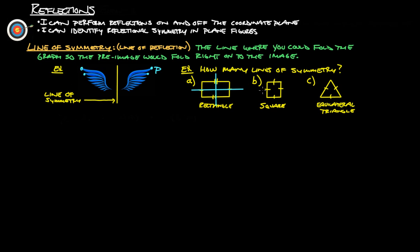With a square, we have the same lines — you could fold it in half this way, fold it in half that way — and also, if you fold it diagonally, this point folds right on top of that point, and the lines fold onto each other. The other diagonal should also work. And then with an equilateral triangle, if we draw a line right down through the middle, it will fold onto the other side — and we can also do this line and this line. So the rectangle has two, the square has four, and the equilateral triangle has three.